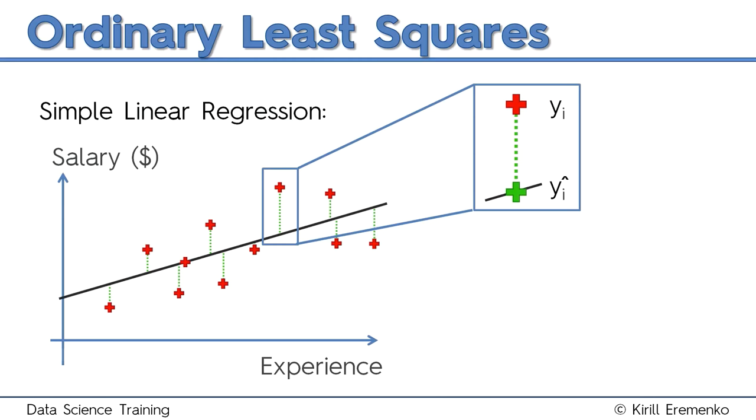Now to get this best fitting line, what is done is you take the sum. You take each one of those green lines or those distances, you square them, and then you take the sum of those squares. Once you have the sum of the squares, you've got to find the minimum.